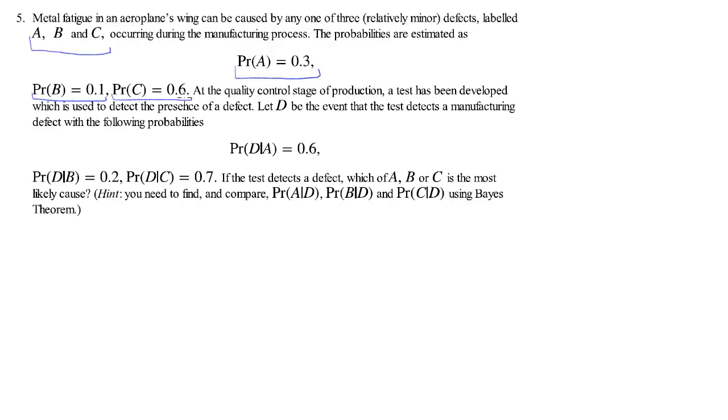That's a very difficult one clearly, and we have a test which detects whether there is a defect or not. Now D is the event that the test detects a defect, but D could detect any of these A, B, or C. The information we now need to proceed further is what is the probability that the test detects a particular fault.